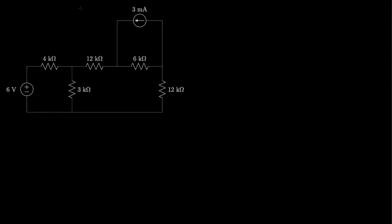As an introduction to the node voltage method, I'd like to use this circuit as an example. The circuit has one voltage source, one current source, and five resistors. In general, we'd like to determine the voltage across and the current through all of the resistors. The node voltage method is one way that we do this.